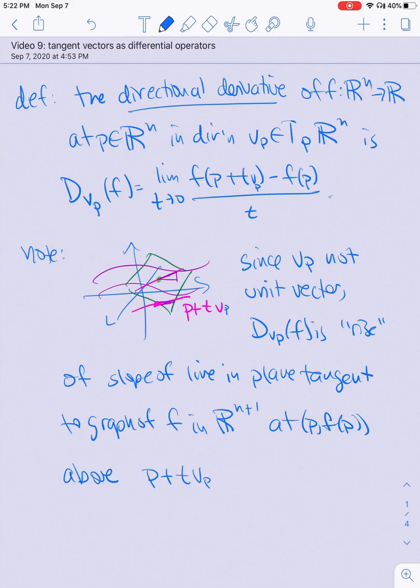If v_p were a unit vector, then this rise is the same as the rise over run, and you would actually get the slope. It's just the rise of the line, so if v_p is actually quite long, then you're going to be computing this whole rise D_{v_p} at f.